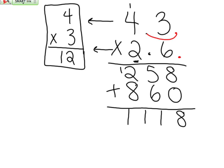In the first number, 4 and 3 tenths, the decimal has moved one place over. In the second number, 2 and 6 tenths, the decimal has also moved one place over. So all together, they have moved two places to the left.